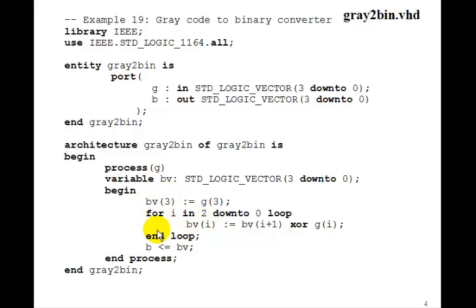When you come out of the loop, we want the output B, which is actually the output, then has to get assigned to BV, the variable which you computed. In this case, it'll generate the circuit with the three XOR gates like we saw before.